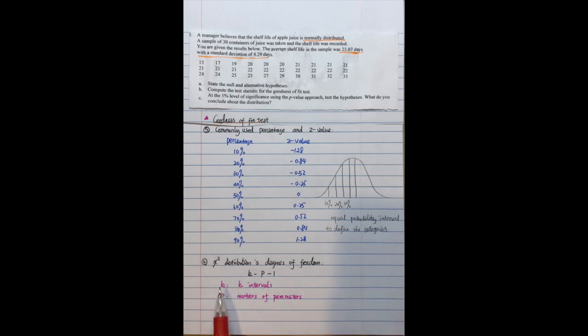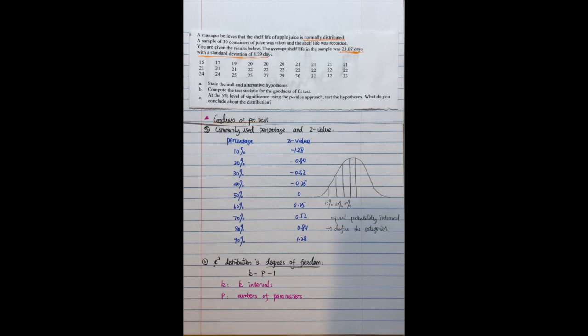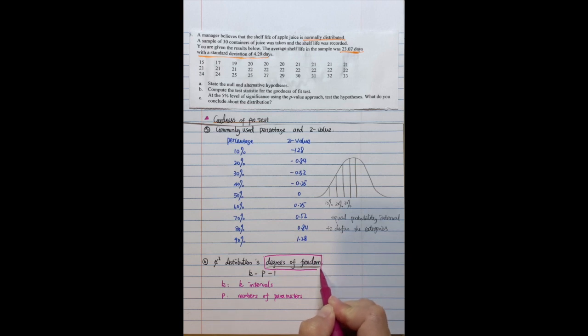And one thing I want to emphasize is for the chi-square distribution, we also need the degrees of freedom. So for the degrees of freedom, we will use K subtract P subtract 1 to compute these degrees of freedom. So here K is the K intervals. That means how many intervals you divide this continuous distribution.